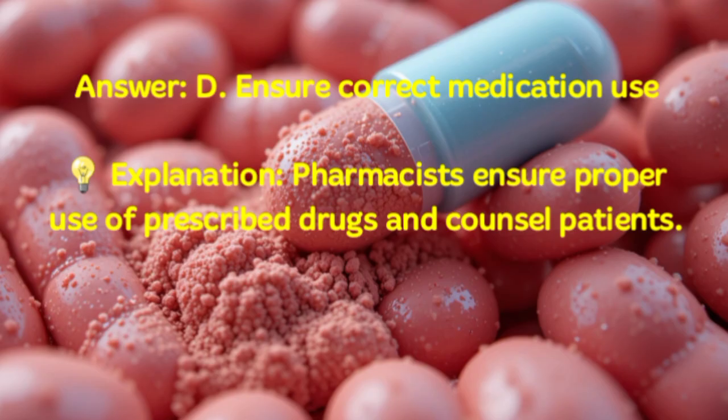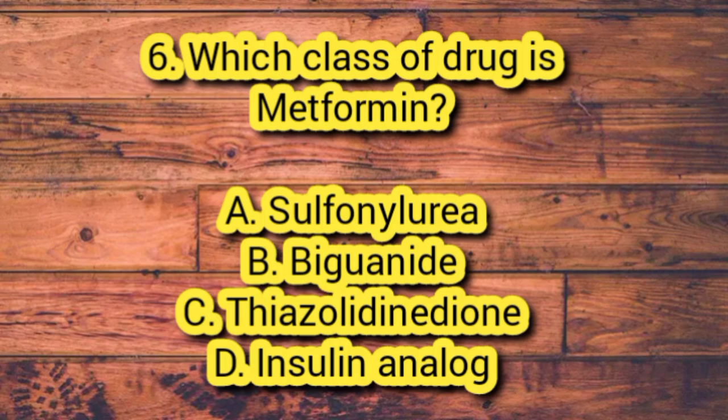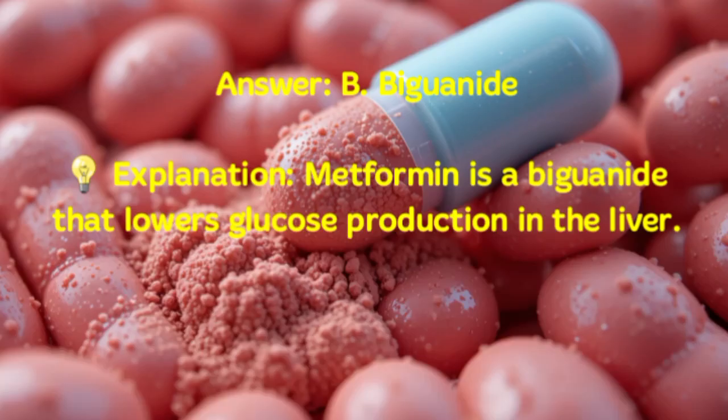Number 6. Which class of drug is metformin? A. Sulfonylurea. B. Biguanide. C. Thiazolidinedione. D. Insulin analog. Answer: B. Biguanide. Explanation: Metformin is a biguanide that lowers glucose production in the liver.